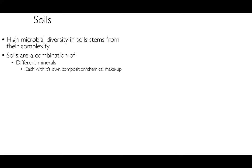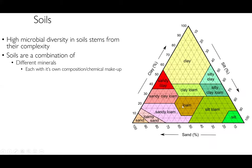Soils have very high microbial diversity, and this stems from their complexity. People don't really think about soils holistically — they think 'here's some dirt' — but soils are a combination of many different minerals, each with its own chemical composition and makeup. We can look at any given type of soil on this ternary diagram. Different soil types depend on how much clay, silt, and sand you have: if you have a lot of clay, you are clay; very little clay and lots of sand, you are sandy; and lots of silt with low clay and sand, you are silt.